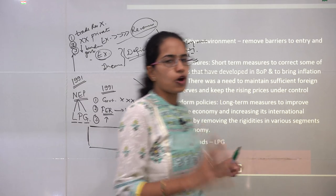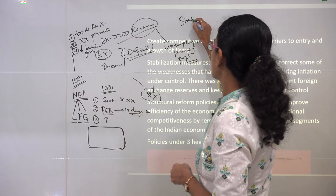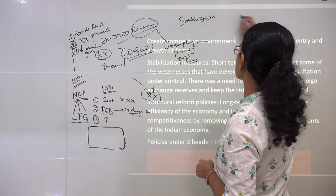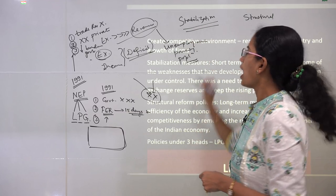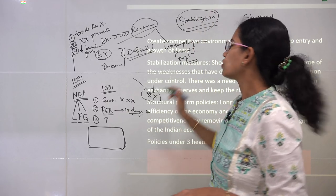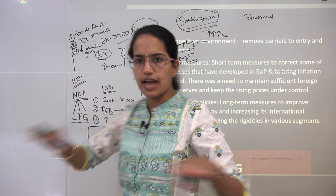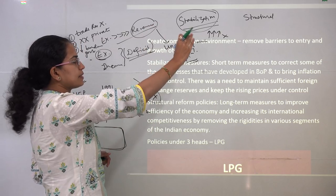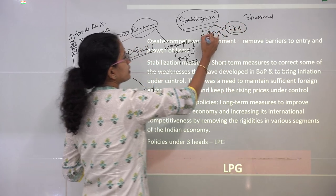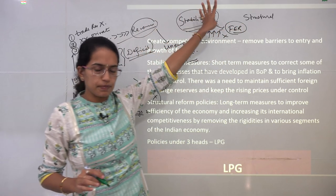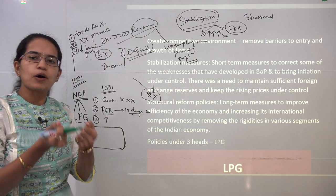The New Economic Policy primarily talked about two measures: the stabilization method and the structural method. Under the stabilization method, the aim was to stabilize the scenario — prices that were rising constantly should be stabilized. The next aspect under stabilization was to maintain a sufficient foreign exchange reserve. These two were the key aspects taken under the stabilization method.